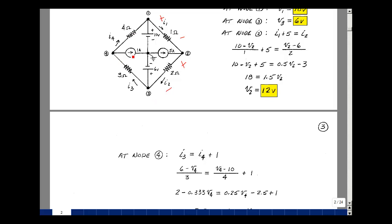I3 is entering, I4 is leaving, and 1 amp is leaving. I3 is equal to I4 plus 1. What's I3? It's going to be this node voltage minus this node voltage divided by 3. 6 volts minus V4 divided by 3, and then the current I4 is going to be this node voltage minus this node voltage, so V4 minus V1, but V1 is equal to 10, divided by 4 ohms.